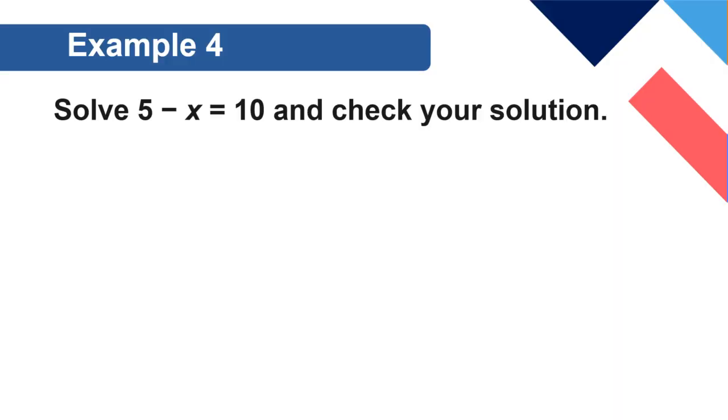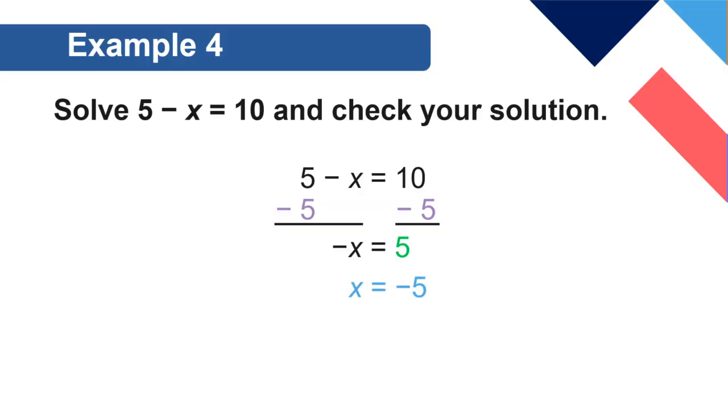Okay. Example 4. An easy one. 5 minus x equals 10. So, the first thing we have to do is get rid of that 5. That's a positive. So, we'll put negative 5 on both sides. That gives us the opposite of x. The opposite of x equals 5. Now, remember, we had this in the last lesson. You could multiply by negative 1. You could divide by negative 1. Or you could take the opposite. Any one of those three. And you get x equals negative 5. Now, let's check that out and have 5 minus negative 5. Quink. Quink. Quink. 5 plus 5. Yep. That is 10. Check.